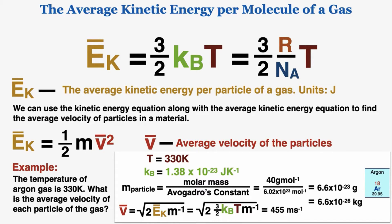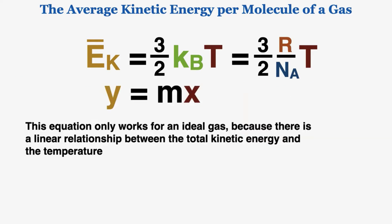That would be the average velocity of any one particle in the gas. This equation only works for an ideal gas because there is a linear relationship between the total kinetic energy and the temperature — you can see it fits the form y = mx. So this equation only works when we're dealing with ideal gases.